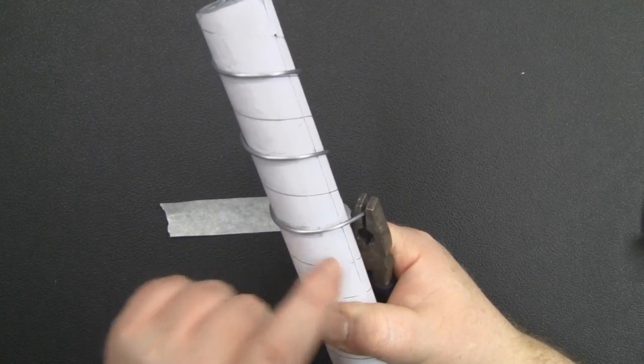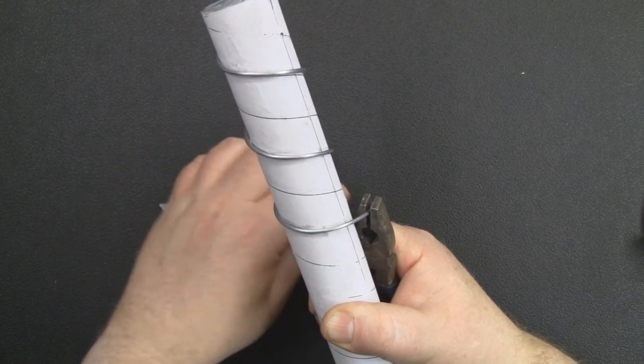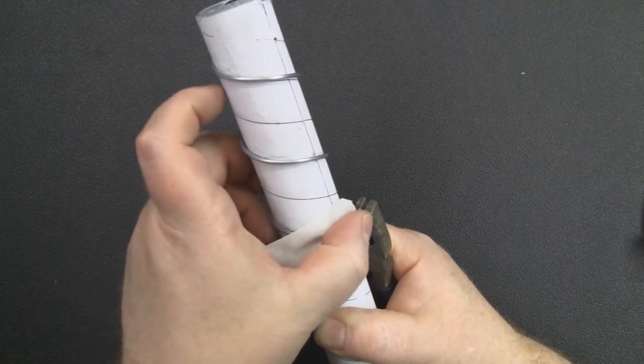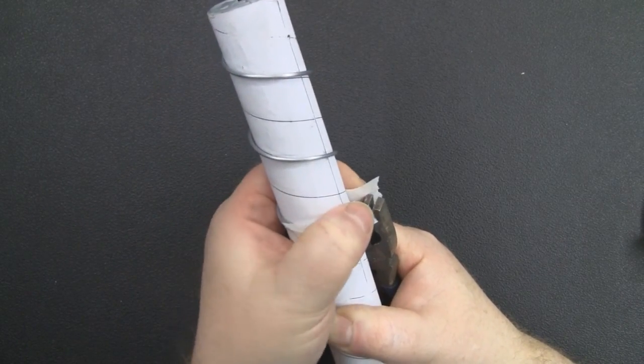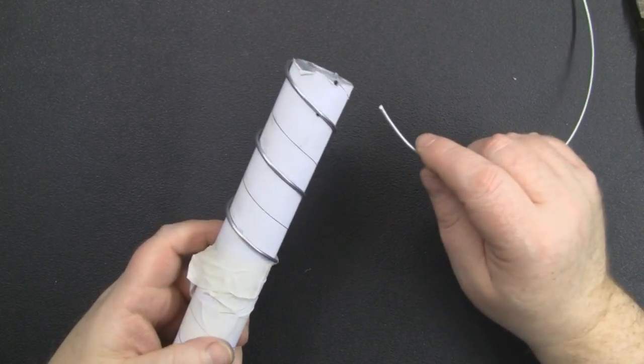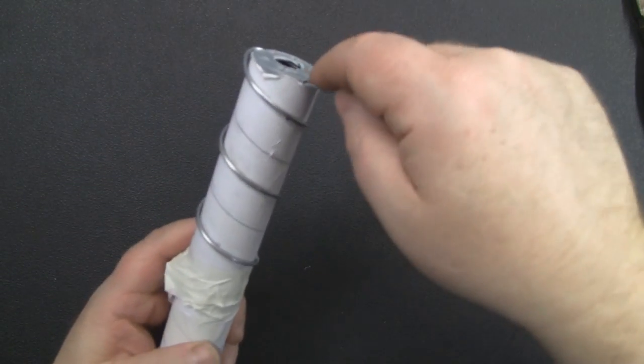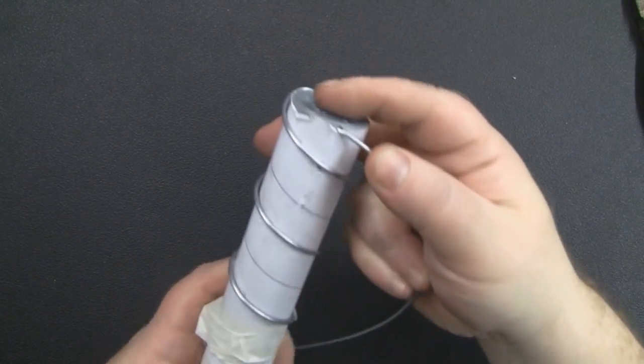I've got my pliers here to hold the wire nice and taut. I'm using some tape to hold it in place, and now I'll start the second coil.